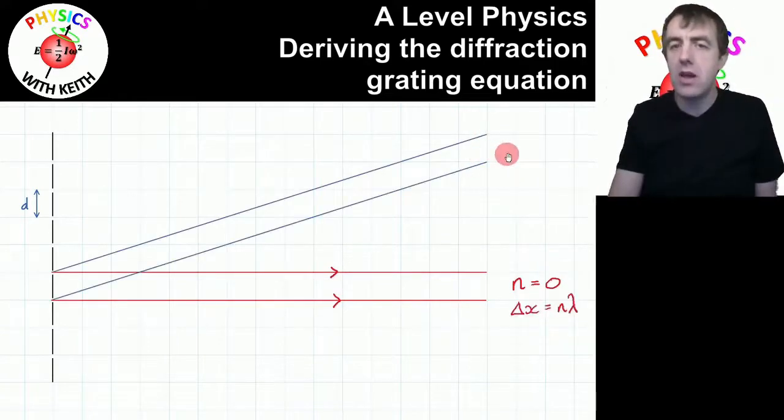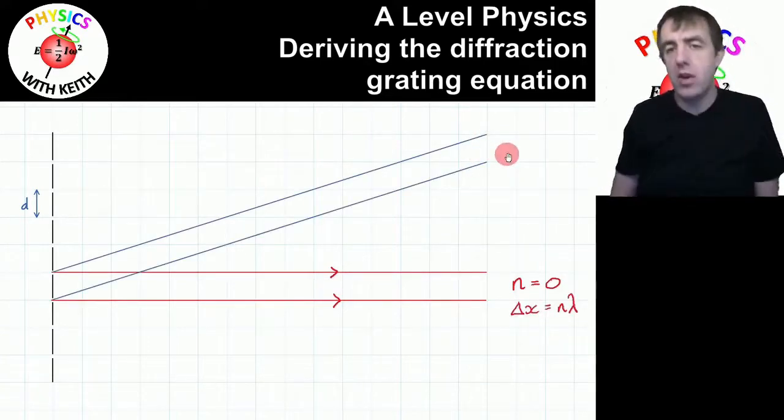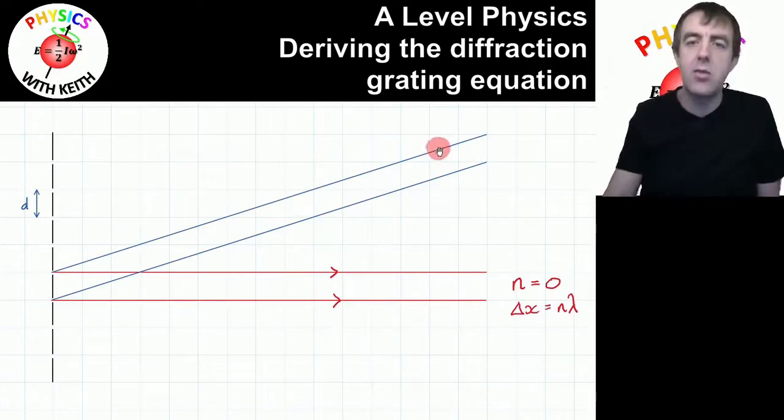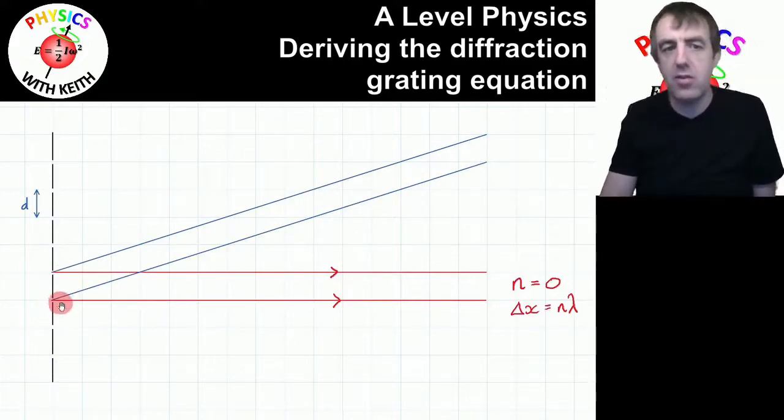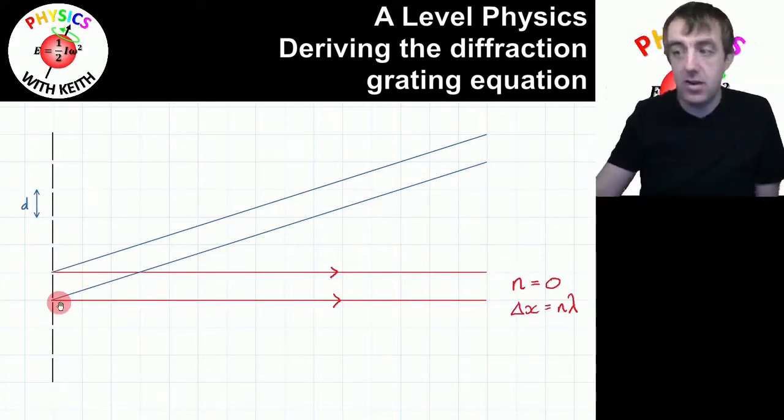Now remember, these two rays will converge to a point, but they're so far away that we can consider those rays to be parallel. And that means if we work back from that point, the bottom ray here has traveled an extra bit of distance, a path difference.